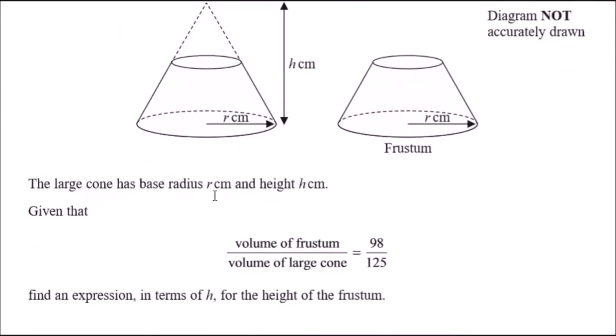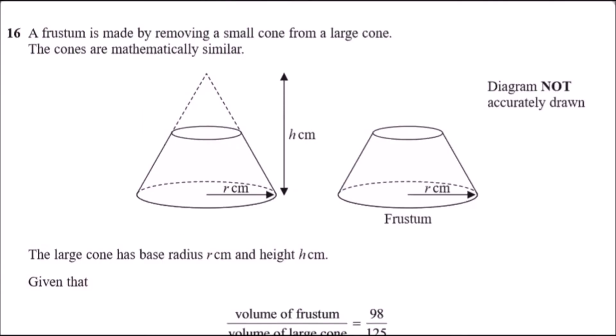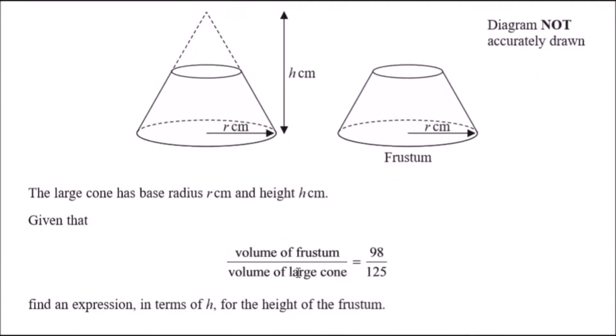The large cone has a base radius of r and a height of h. The volume of the frustum over the volume of the large cone is represented by 98 and 125 parts. If we consider the volume of the frustum itself is 98 parts and the whole cone is 125...